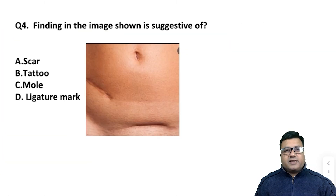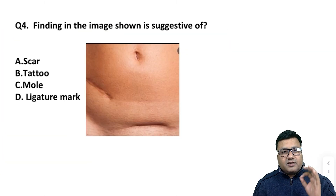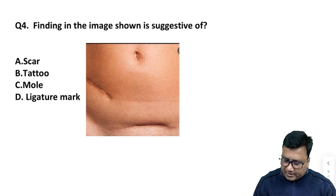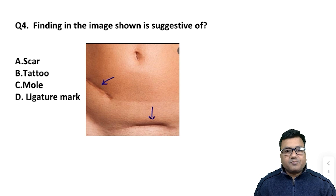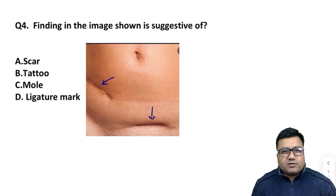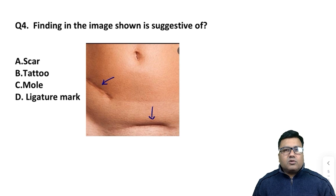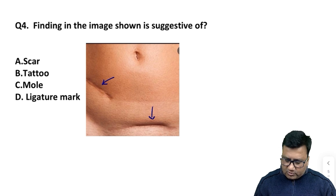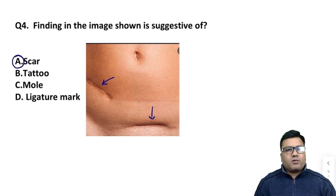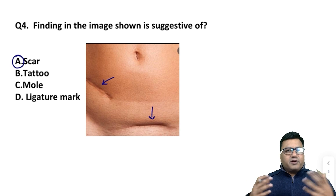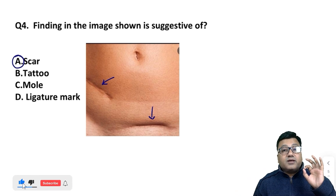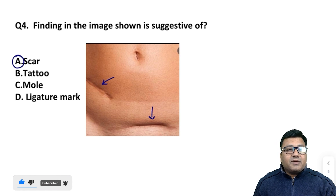Next, question number 4: finding in the image shown is suggestive of? Image में दो बड़ी important चीज़ें दिख रही हैं — it looks like an abdominal picture of a person जहां पर दो cuts के area दिख रहे हैं, पर ये पुराने और healed cuts हैं। These are called scar tissues — probably operative scars present on the abdomen, clearly seen on the image। Do not consider them as tattoo or mole। लाँगे चर्मार्क तो neck में होता है।